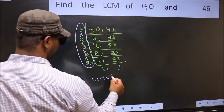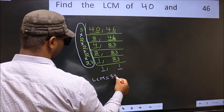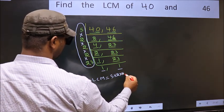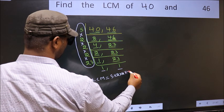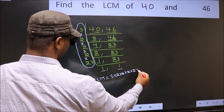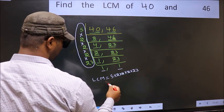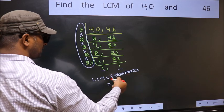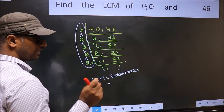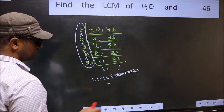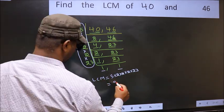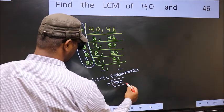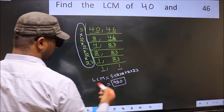That is 5 times 2, times 2, times 2, times 23. When we multiply these numbers, we get 920. So 920 is our LCM.